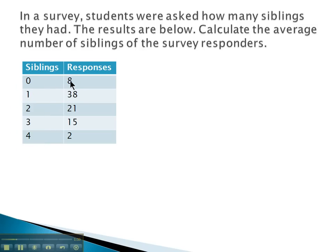So what we will do is we will multiply the frequency, the 8 responses, by the number of siblings. To get 0 for the first row, 1 sibling times the 38 people who have that gives you a total of 38 siblings. 2 siblings times the 21 people who had 2 siblings gives us 42 total siblings.